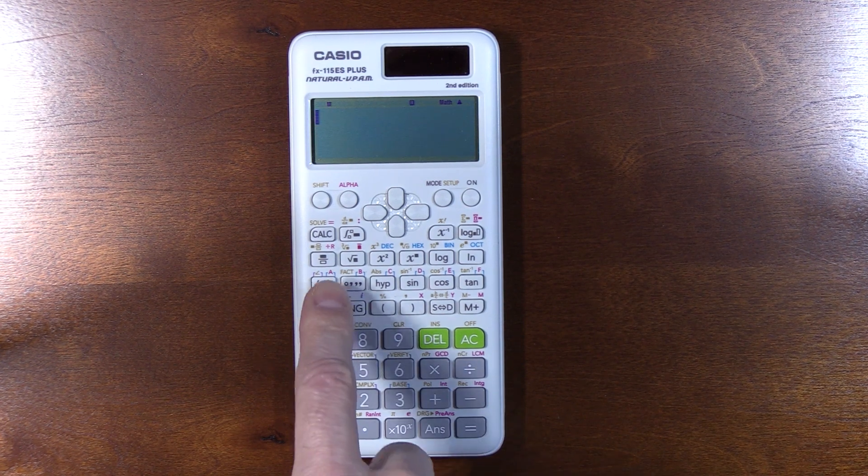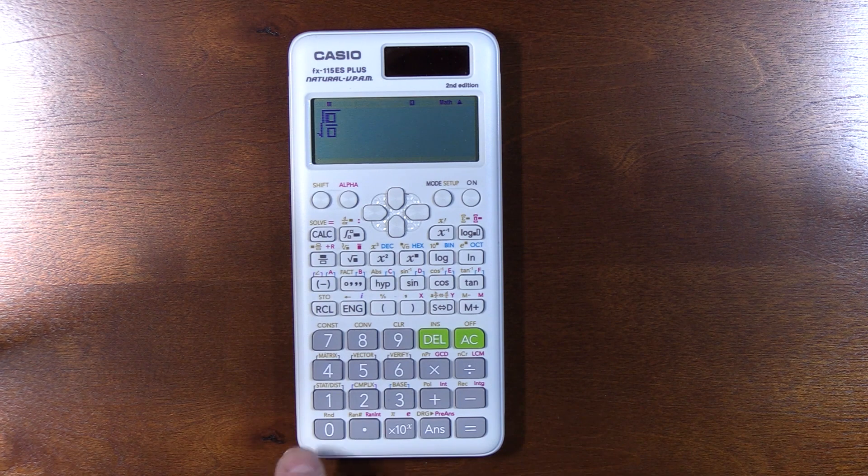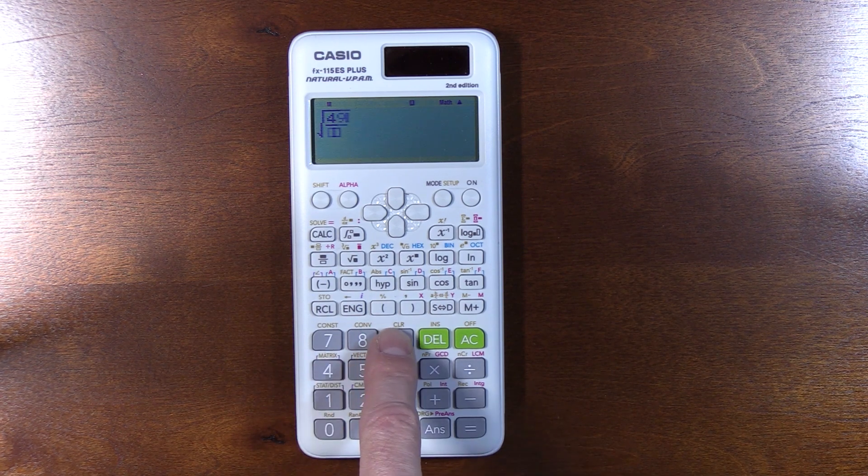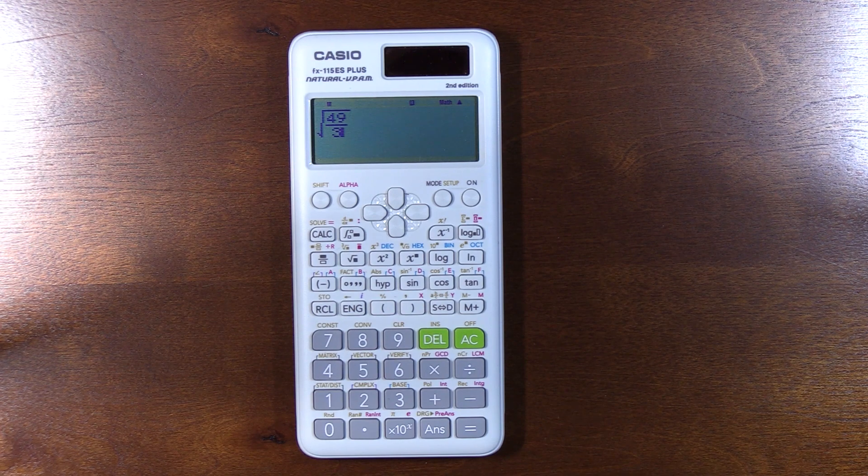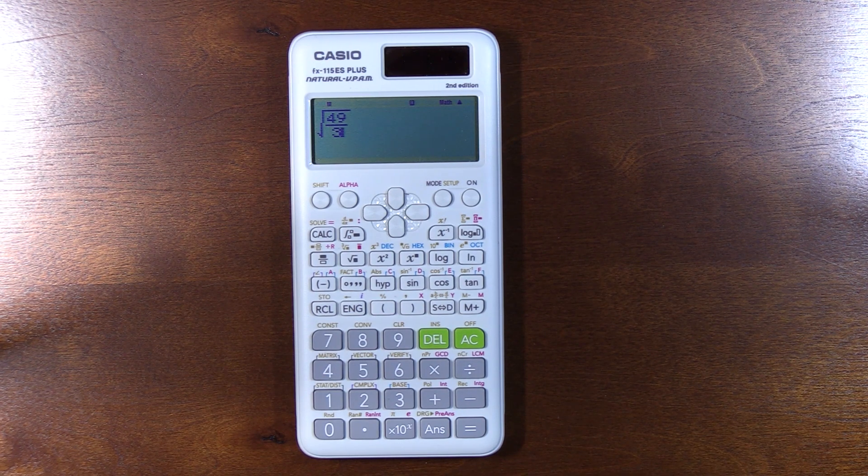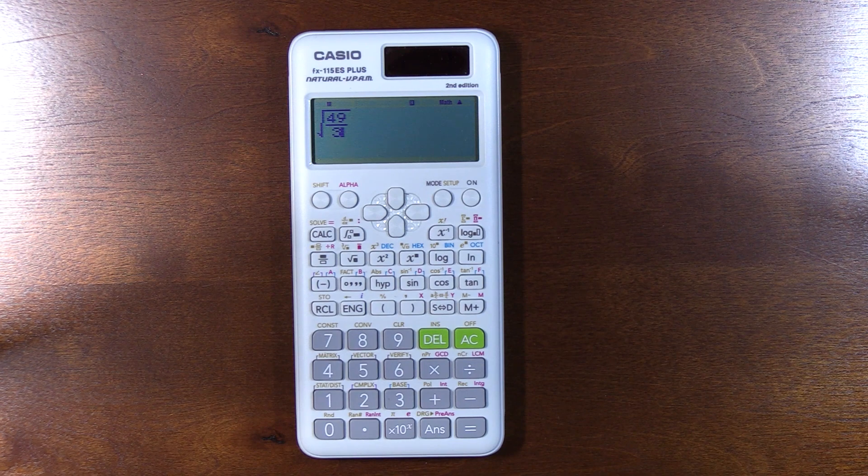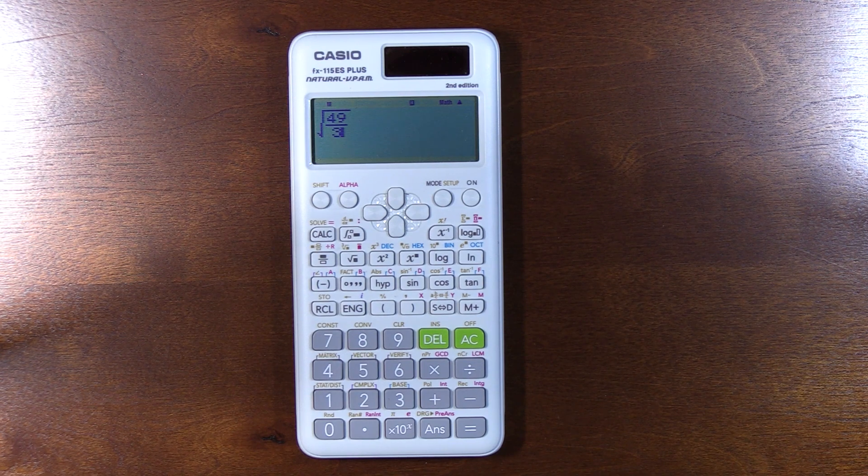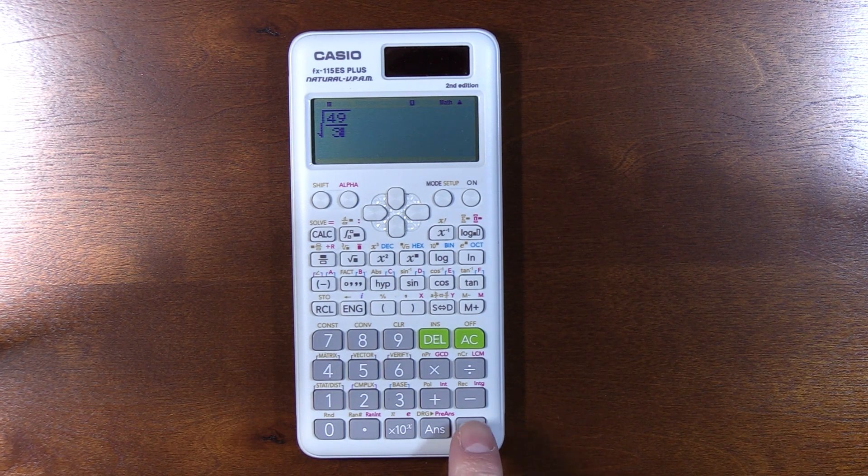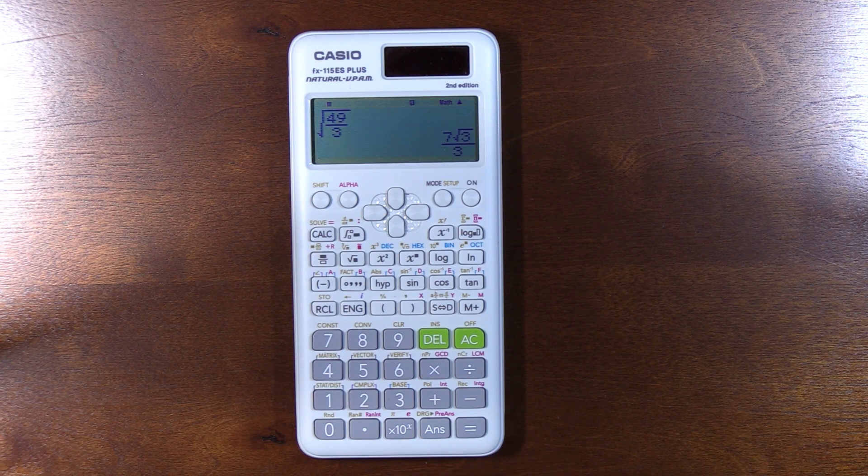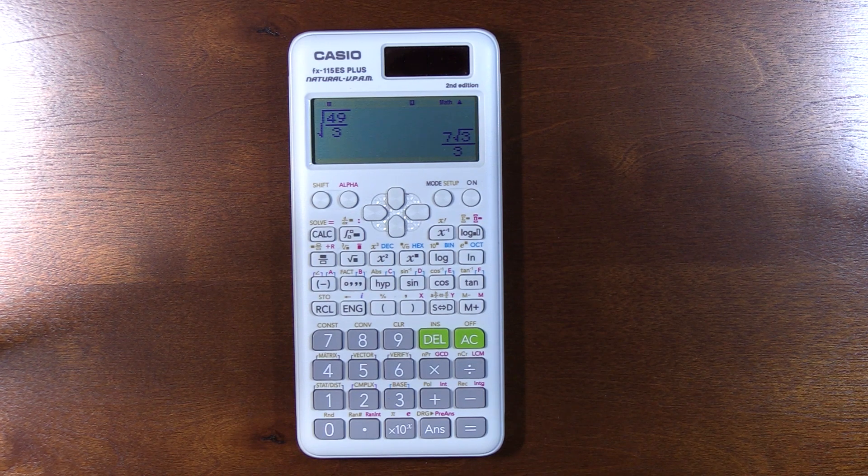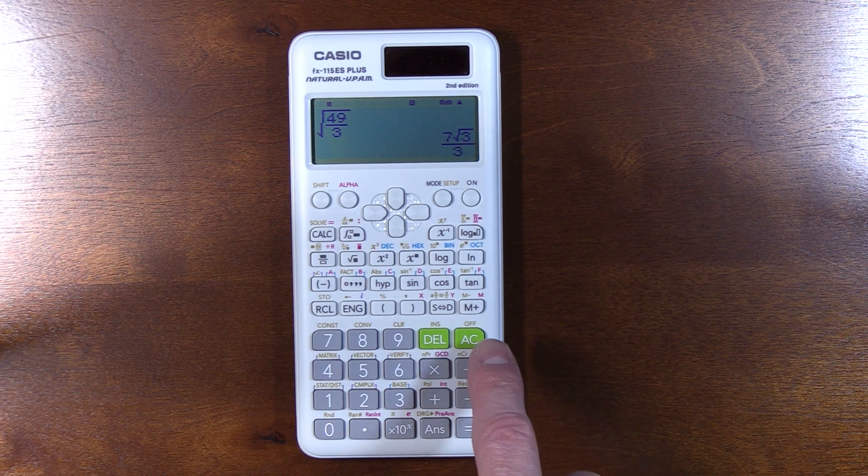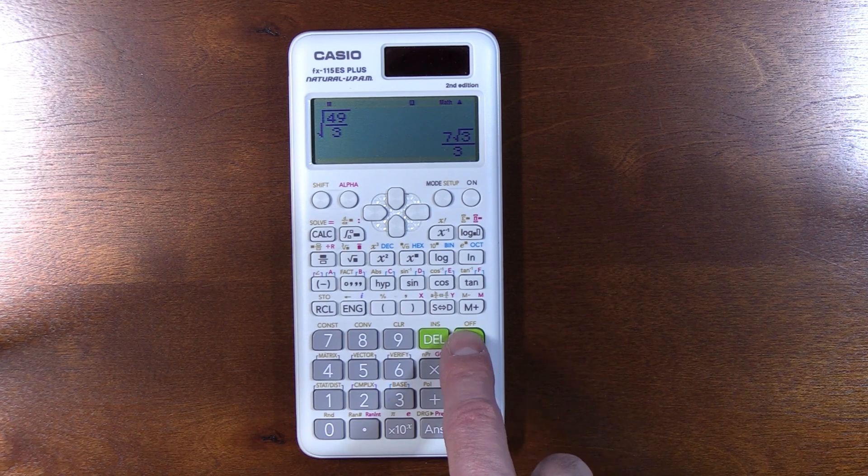So in this case, when you take the square root of 49 over 3, we probably recognize that the top is a perfect square, so that should simplify to 7 over the square root of 3, and then we would rationalize the denominator and get 7 times the square root of 3 all over 3. Really handy answer. That's what we would do in a math class, so it's nice to get that answer on this calculator.